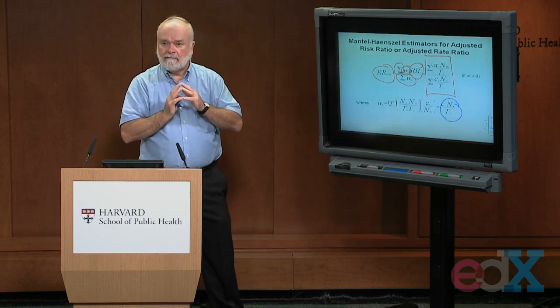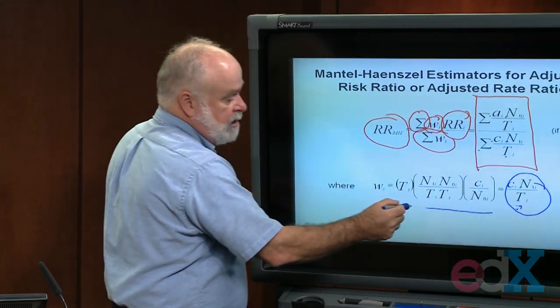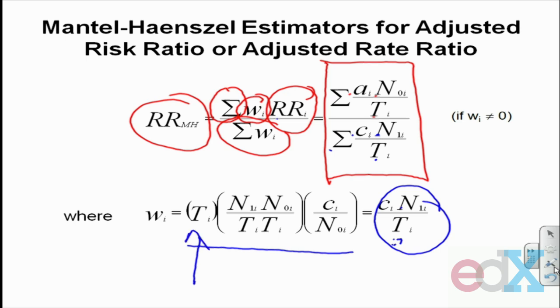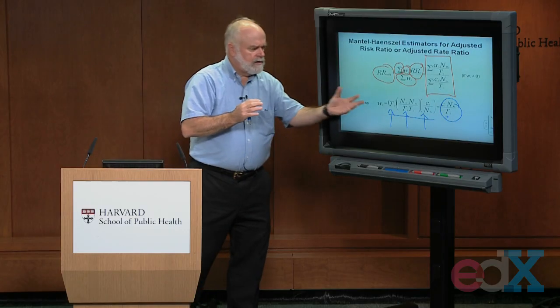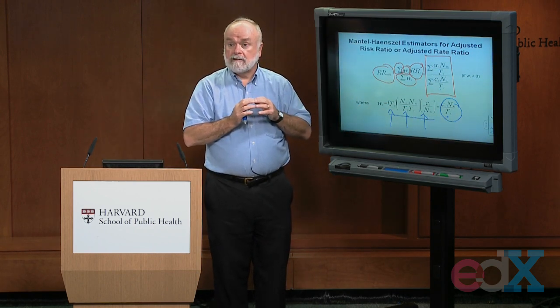The first time I saw that formula I probably had the same reaction you're having: why does C times N1 over T reflect how much information there is in a table? Mathematically, this number can be re-expressed as a product of three quantities: T (the total number of people in the table), N1 times N0 divided by T squared (the number of exposed times the number of non-exposed divided by T squared), and C over N0 (the cumulative incidence of disease among the non-exposed people). These three things combine to give you the Mantel-Haenszel weight.